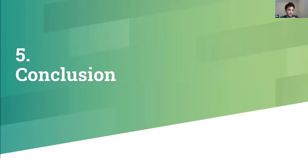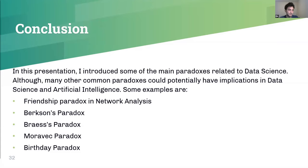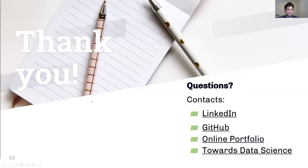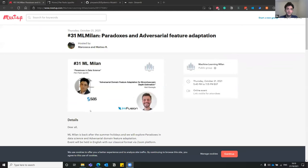To conclude, in this first part of the presentation I introduced some of the main paradoxes associated with data science. Many other common paradoxes could potentially have implications for data science and artificial intelligence — some examples not covered today are the Friendship Paradox in network analysis, the Parkinson's Paradox, and Russell's Paradox. If you have any paradox you'd like to add to this list, please feel free to comment in the chat. Now I'd also like to show you the dashboard I created around epidemic modeling, which is freely available online.